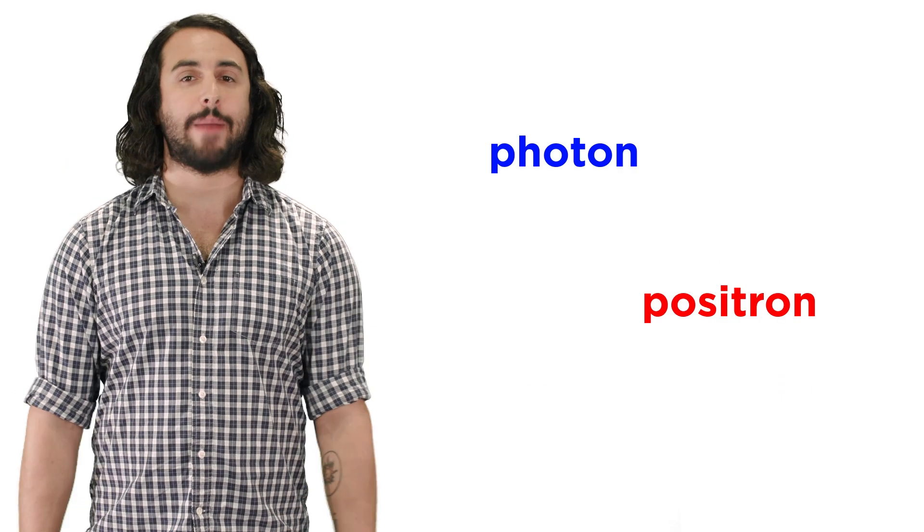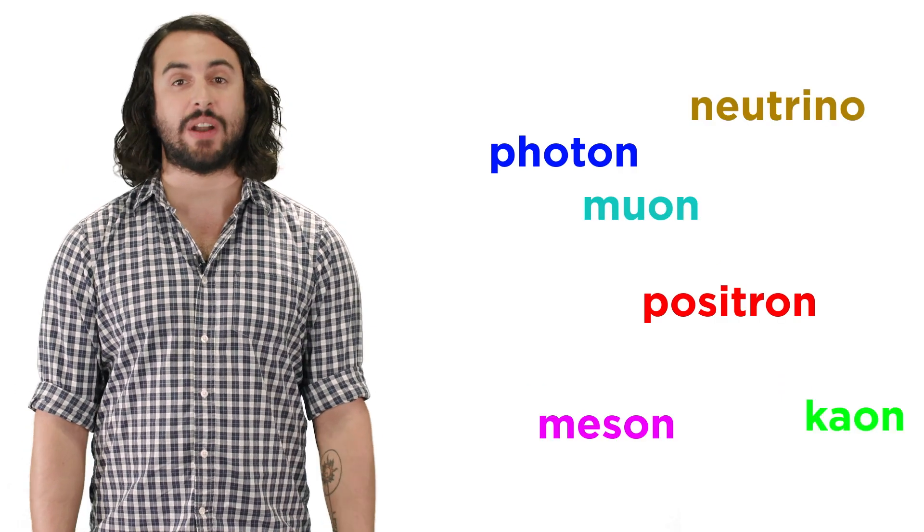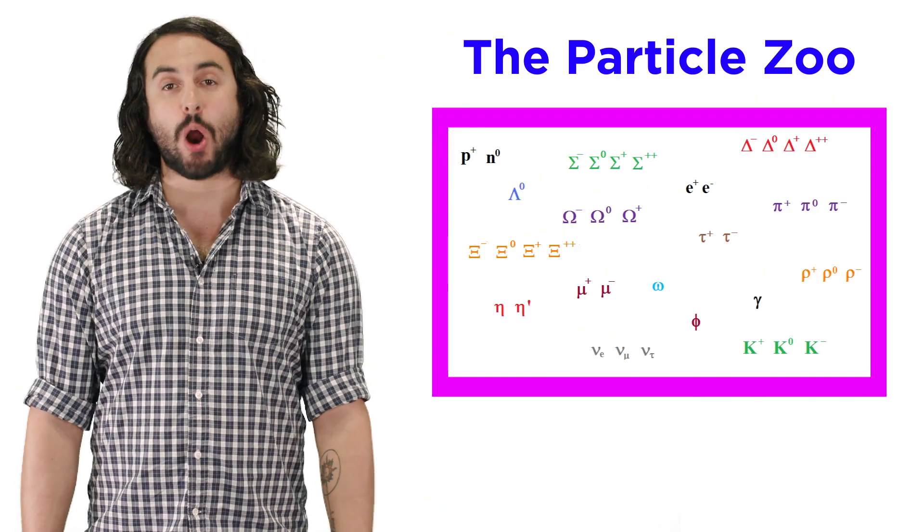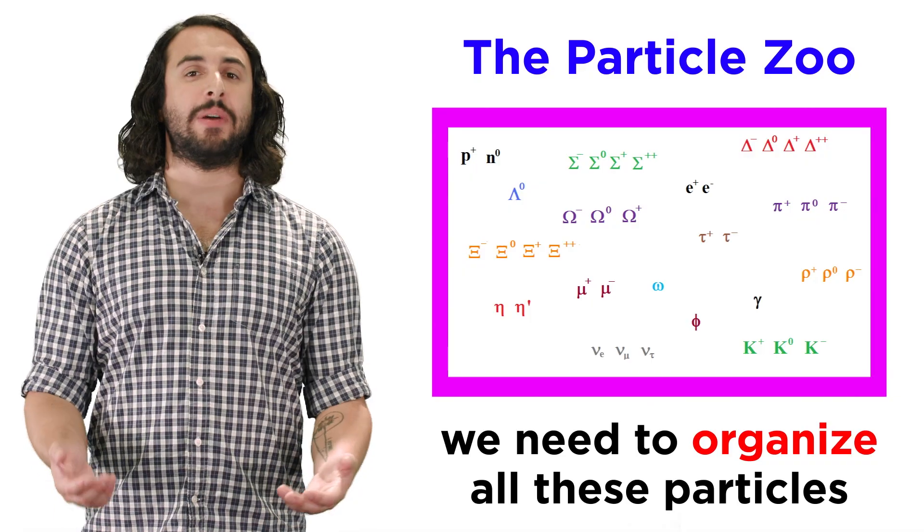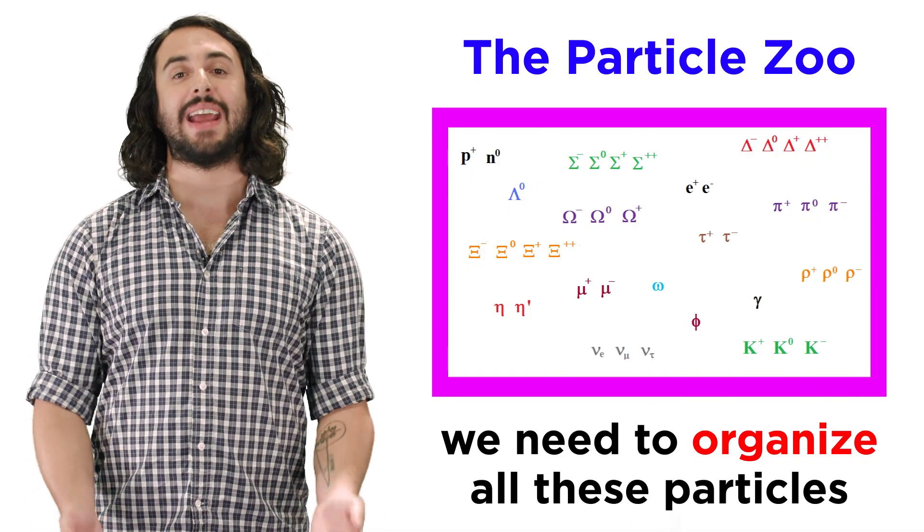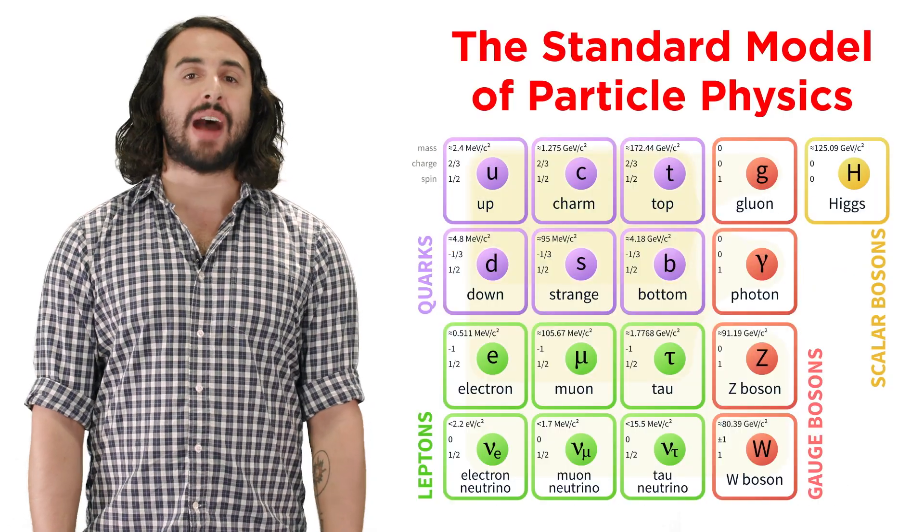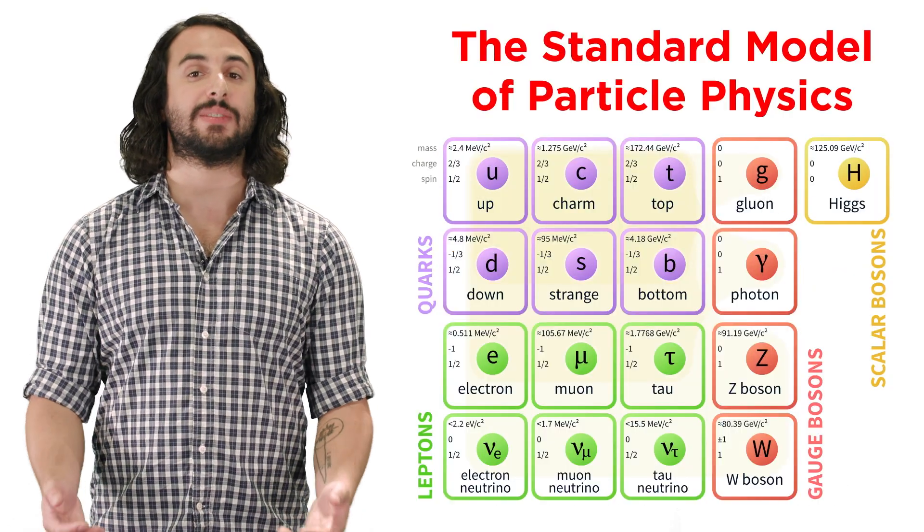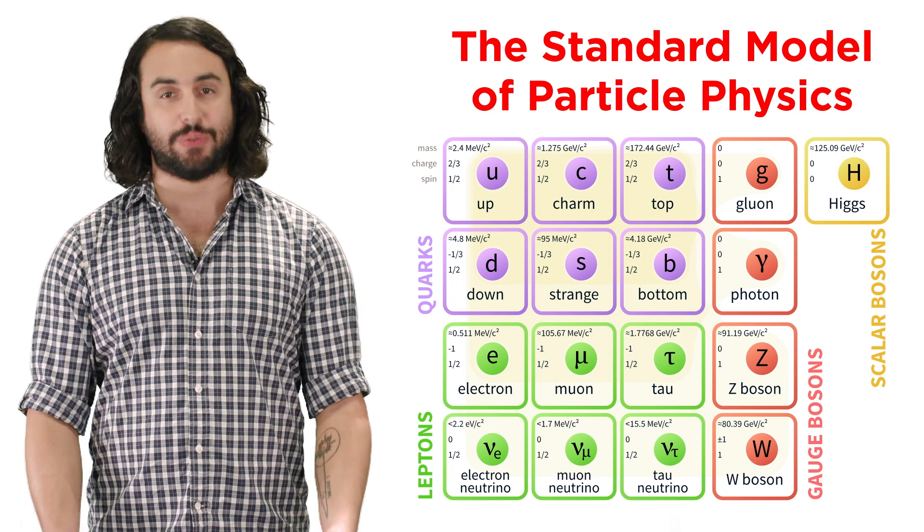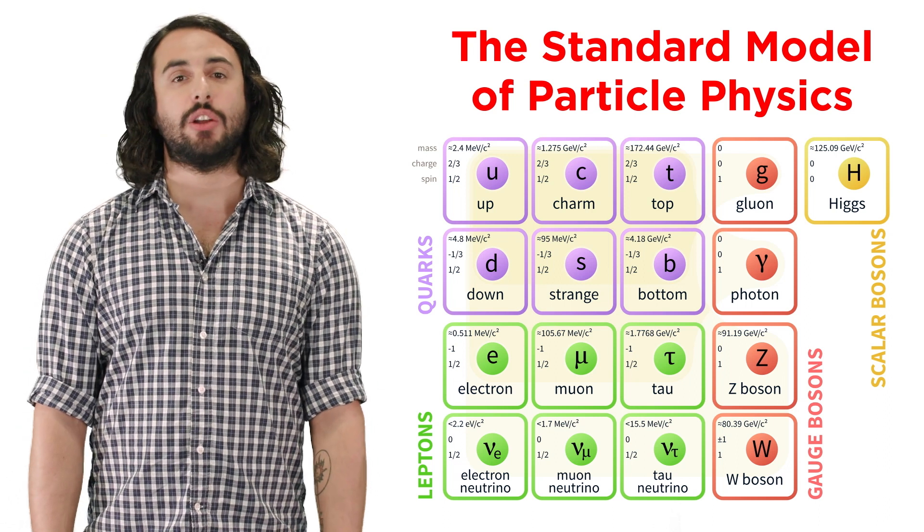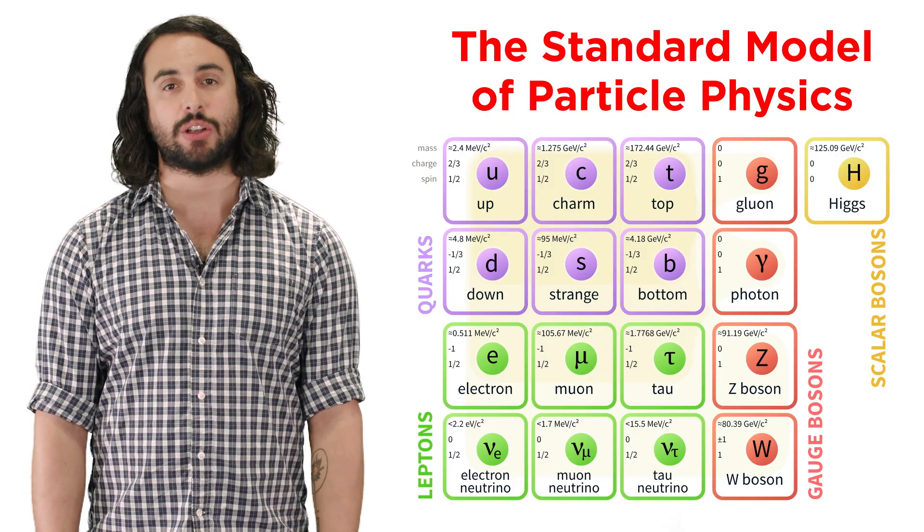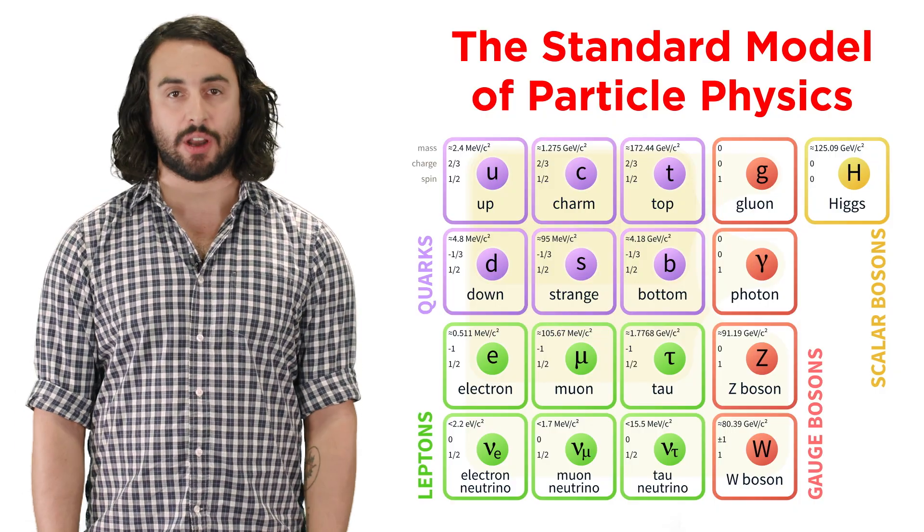So many particles were hypothesized and confirmed in the 20th century that their ever-growing catalog was dubbed the particle zoo, but with so many particles it becomes very important to be able to define and categorize them, and the model that describes all of these particles is called the standard model of particle physics.